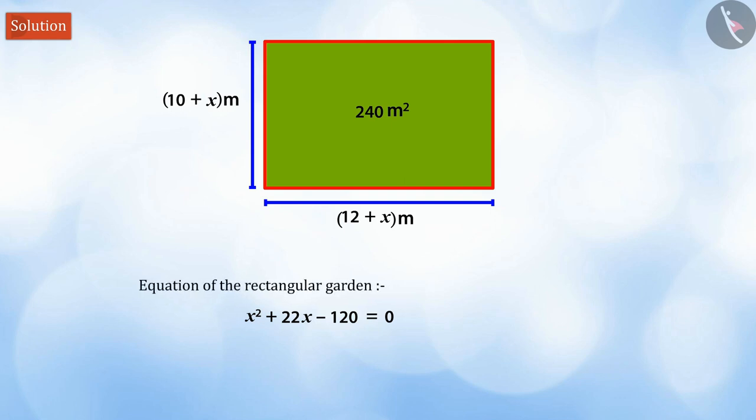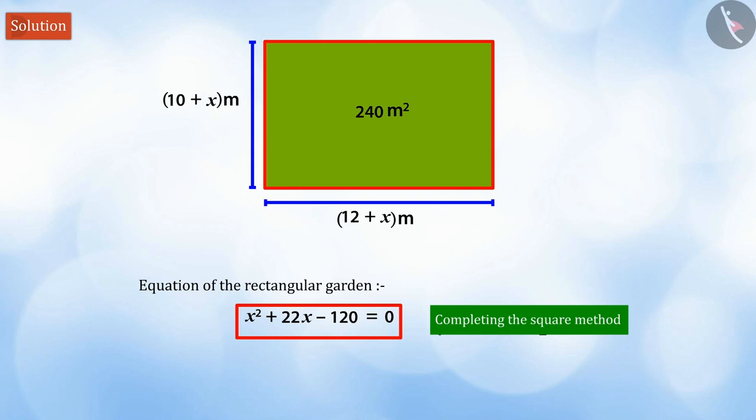Do you remember how we had solved a similar equation in the previous video? Well done! We can solve this by completing the square method. First and foremost, we see that the equation is not in the form of perfect square. To simplify it, let us move its constant to the right side.